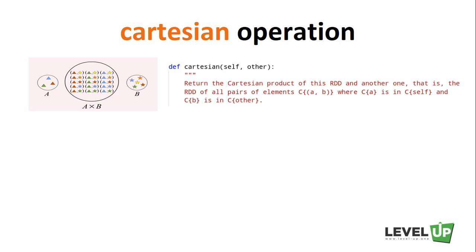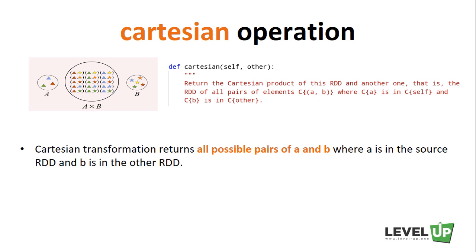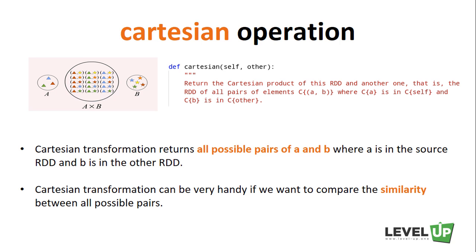The last operation we want to talk about is Cartesian. The Cartesian transformation returns all possible pairs of A and B where A is in the source RDD and B is in the other RDD. The Cartesian product can be very handy if you want to compare the similarity between all possible pairs. For example, we can compute every user's rating in each movie. We could also take the Cartesian product of an RDD with itself, which would be useful if we would like to analyze things like product similarity.